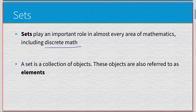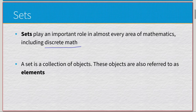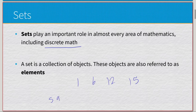Everything inside of a set is referred to as an element. These elements can be anything — over the course of this video we'll mostly see integers, like one, six, twelve, fifteen. But elements could be letters, shapes, colors, animals — anything that you can group together, you can make a set of.